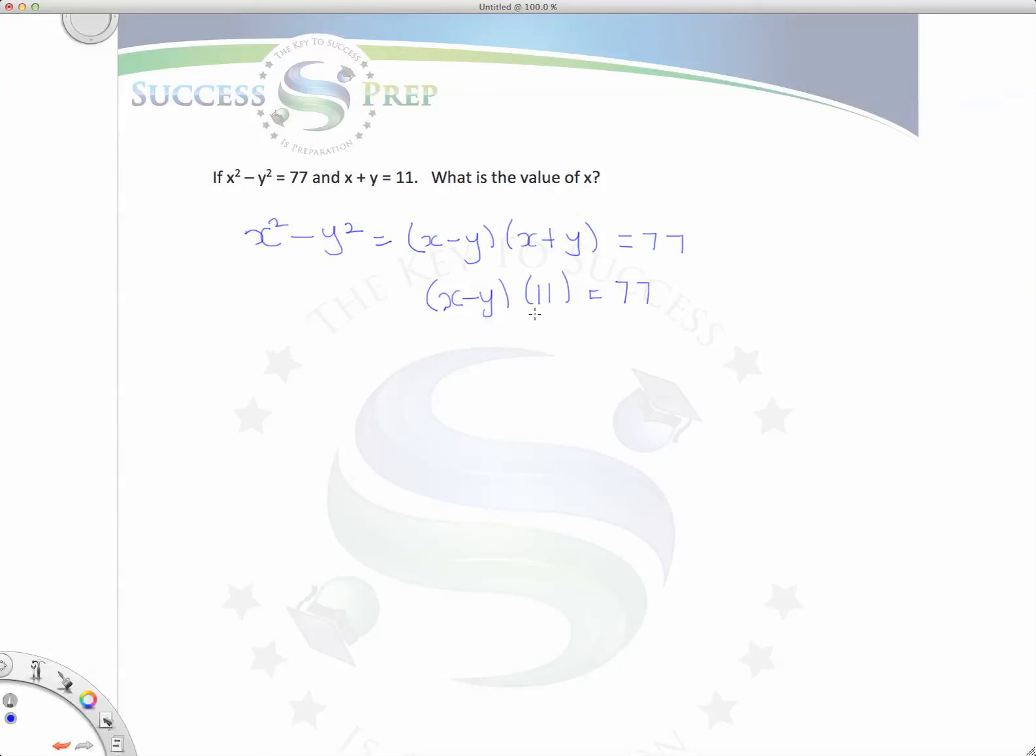Go ahead and divide both sides by 11. The value of x minus y is equal to 77 divided by 11 and that's equal to 7.